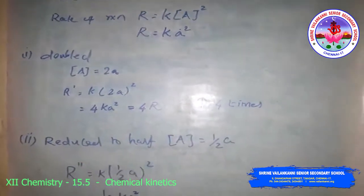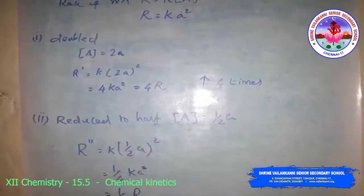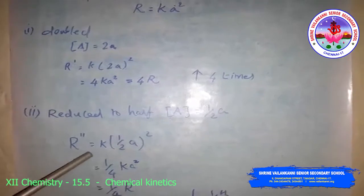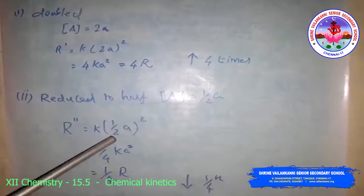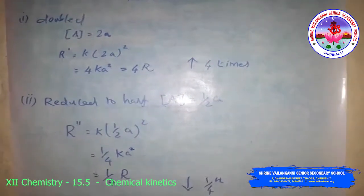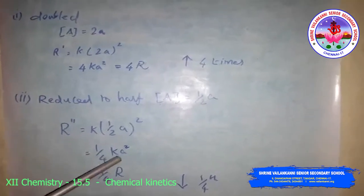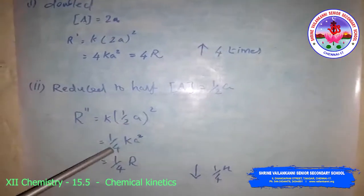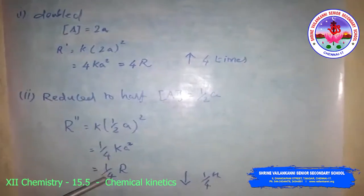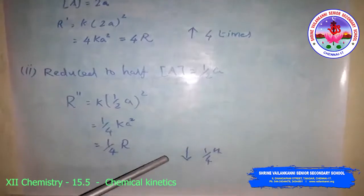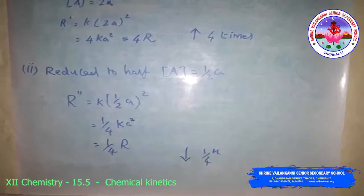Next, when concentration is reduced to half, concentration of A = (1/2)A. So R'' = K(1/2 · A)² = (1/4)KA² = (1/4)R. The rate of reaction decreases to 1/4 times.